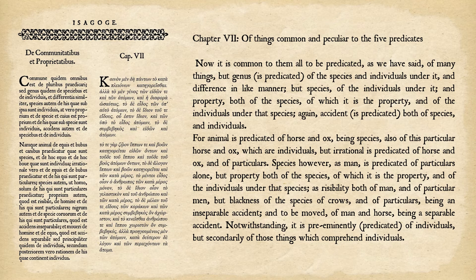Genus is said of the species and individuals under it. Animal is predicated of horse and ox, being species, and also of this particular horse and ox, which are individuals. Irrational is predicated of horse and ox and of particulars. Animal is the genus, so it can be predicated of horse and ox. Horse and ox are species, and this particular horse and ox are individuals — so you can predicate 'animal' either way.